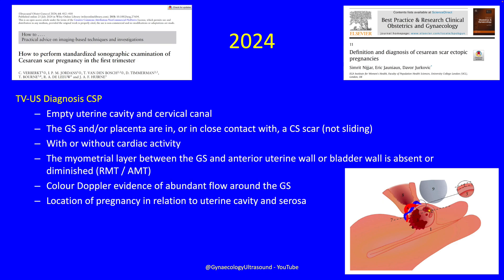The diagnostic criteria are: an empty uterine cavity and cervical canal; the gestation sac is in close contact with the section scar with a bit of pressure and no sliding, showing it's implanted; there may or may not be cardiac activity. We've discussed residual myometrial thickness and adjacent myometrial thickness in niches — it's just the same in a scar pregnancy. You must put color Doppler on to prove that the trophoblast is implanted, and you can decide where the pregnancy is in relation to the endometrial cavity, the myometrium, and the serosa.